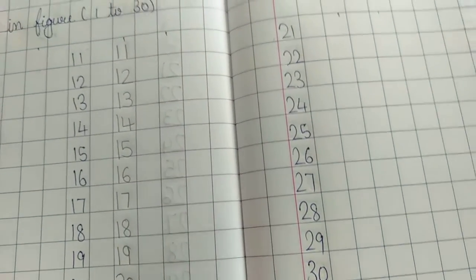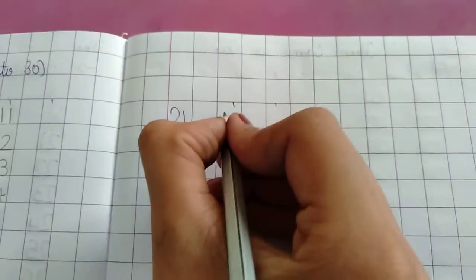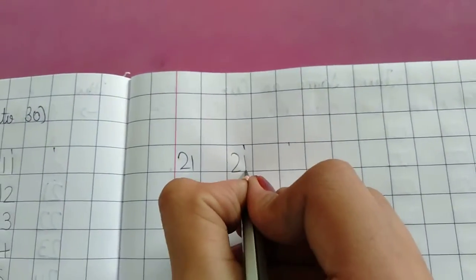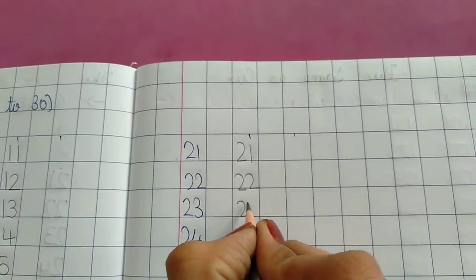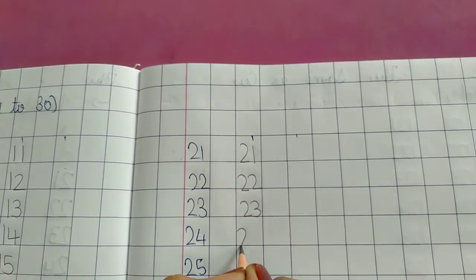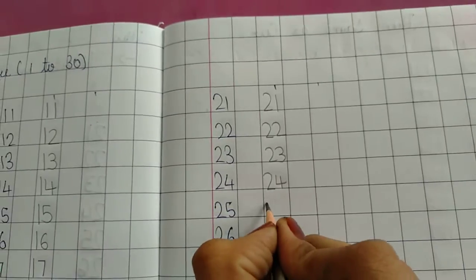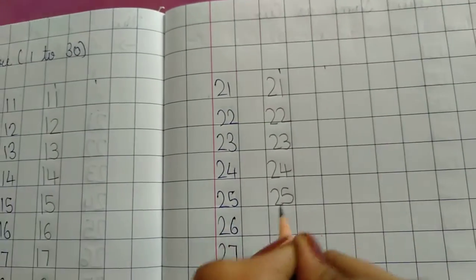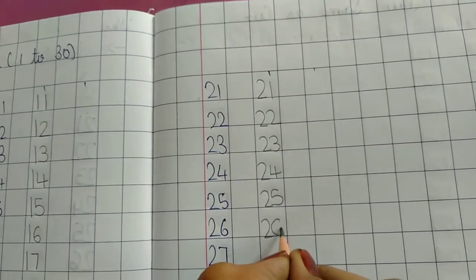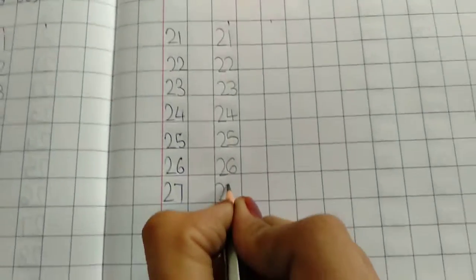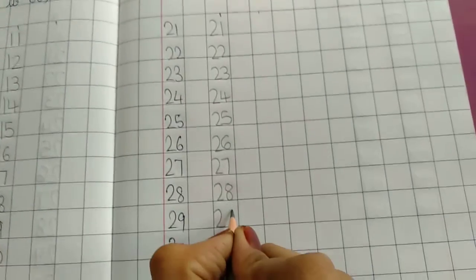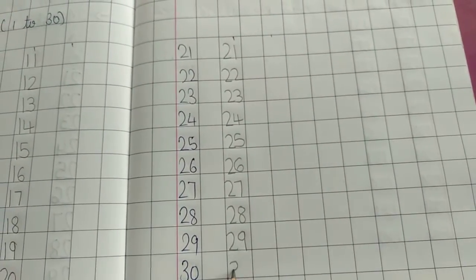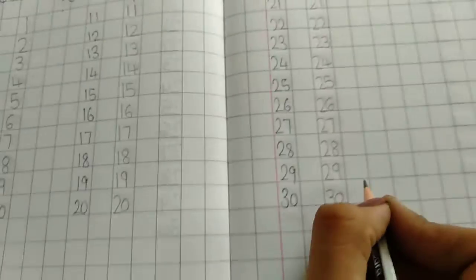2-0, 20. 2-1, 21. 2-2, 22. 2-3, 23. 2-4, 24. 2-5, 25. 2-6, 26. 2-7, 27. 2-8, 28. 2-9, 29. 3-0, 30.